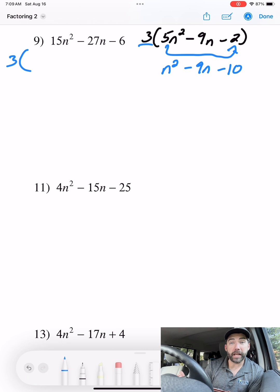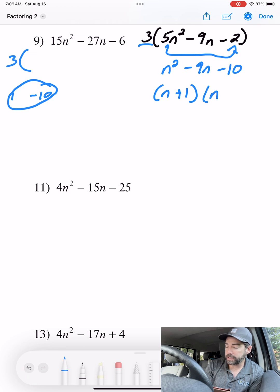What multiplies to be negative 10 and combines to be negative 9? Well, that's 1 and negative 10. Hey, there's our answer. So we have n plus 1 and n minus 10. These multiply to be negative 10, combine to be negative 9. Looking good.